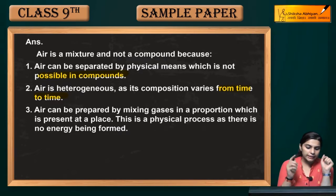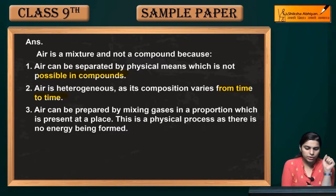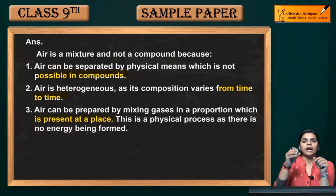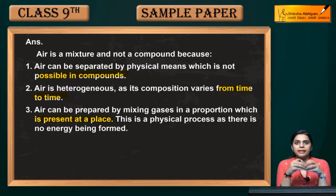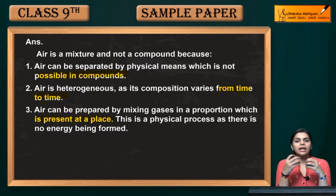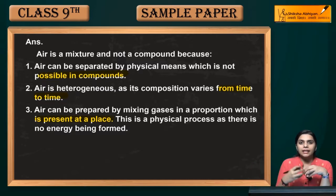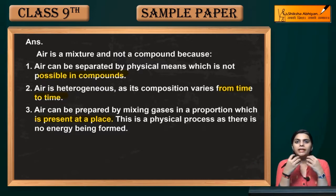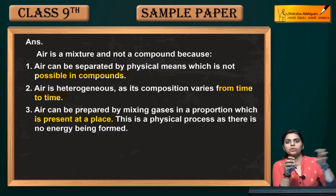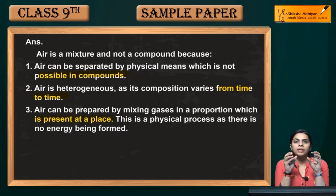Next point: air can be prepared by mixing gases in any proportion present at a particular place. In any particular place you can make a mixture of air. If we go to another place, we can do the same. But if it is a compound, that is not possible — it is fixed in one place as it is in another. So this is the difference: air is a mixture, not a compound.